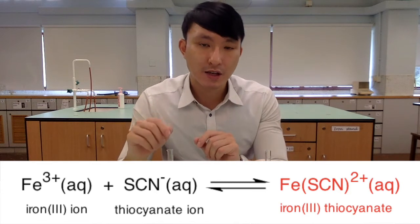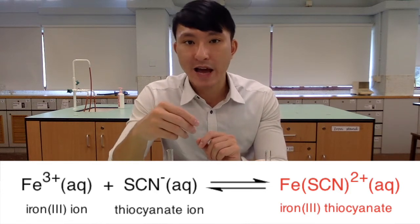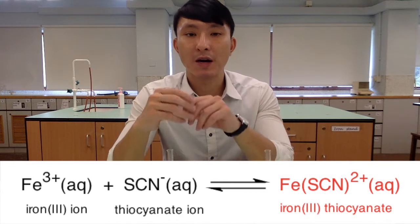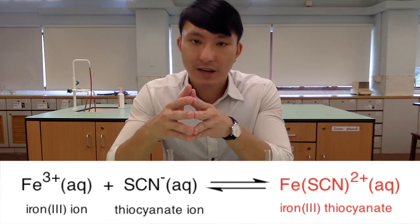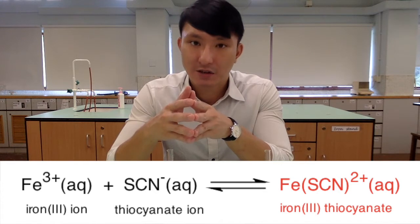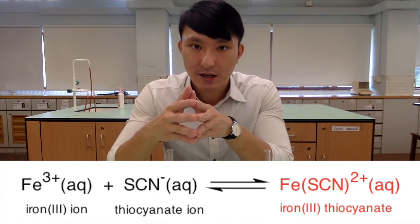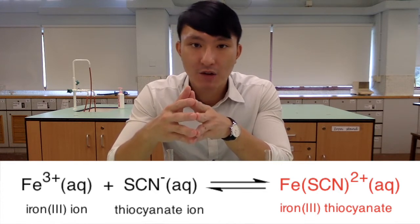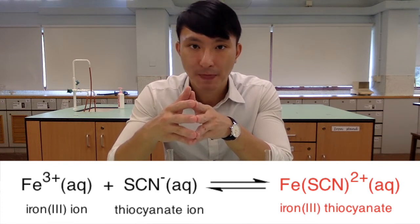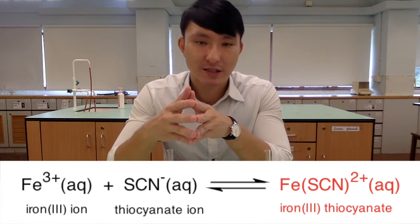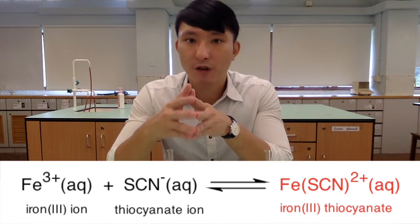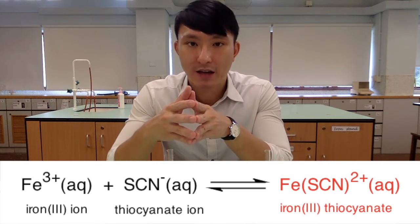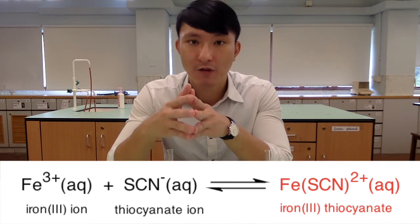As you can see from the reaction, IN3 ion reacts with thiocyanate ion to form a complex ion. In this reversible reaction, we are particularly interested in looking at the colors of the chemical species. First of all, IN3 ion should have a pale yellow to pale brown color. For thiocyanate ion, it doesn't have any color, so it is colorless. And for the product, it actually carries a very intensive blood red color.